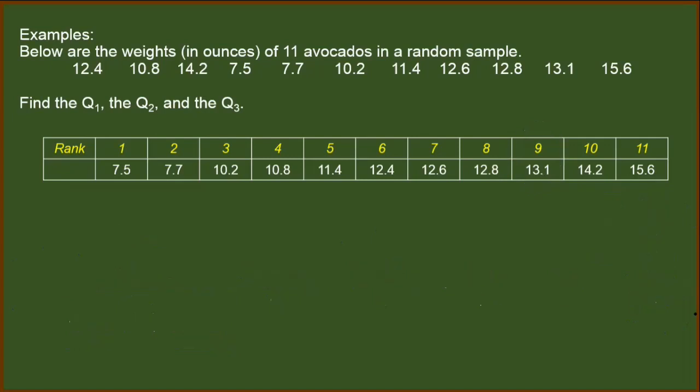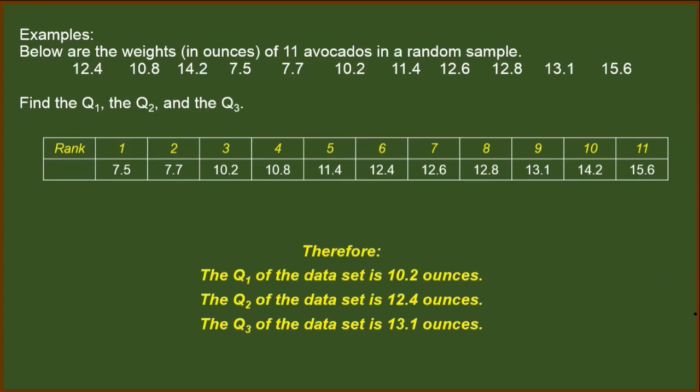So let's just write general conclusion for this. We have the following values for Q sub 1, Q sub 2, and Q sub 3. So that's it for quartiles. Thank you for watching and see you on the next video.